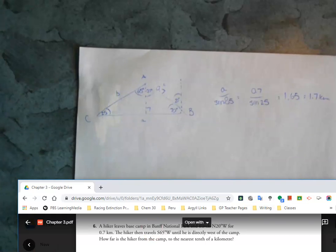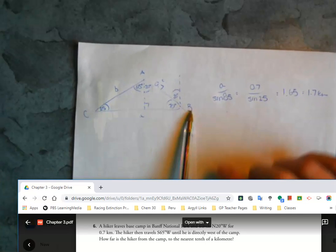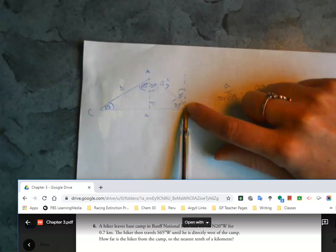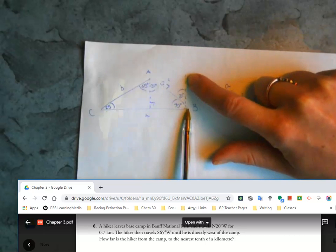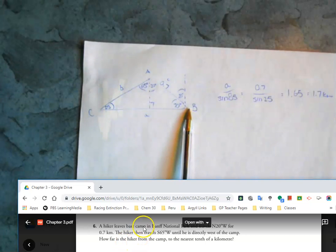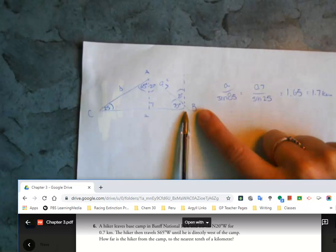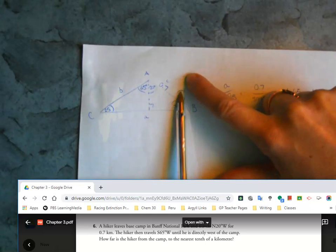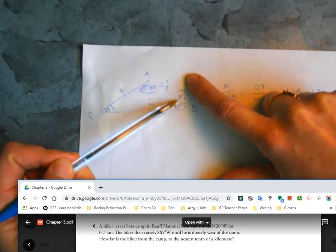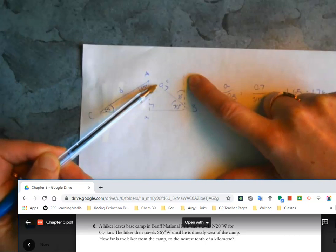So a hiker leaves base camp in Banff National Park and travels north 20 degrees west. When I'm doing questions like this I always set up my initial line here, so this is north. He's going 20 degrees to the west, so this was his initial leg of the journey and it said that he does that for 0.7, so I wrote that in.